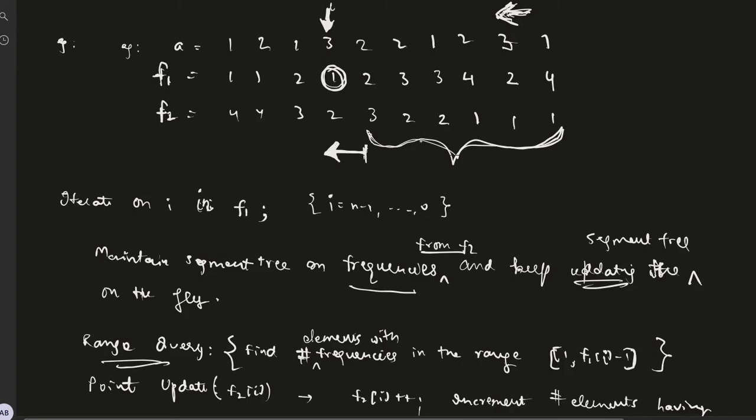Now we want the number of elements in the range 1 to f1 minus 1. That is 0, so this doesn't make sense. For example, had i been 2, we would have wanted the number of elements in the range 1 to 1, so these three elements would have been reported. So the answer for this query would have been 2.